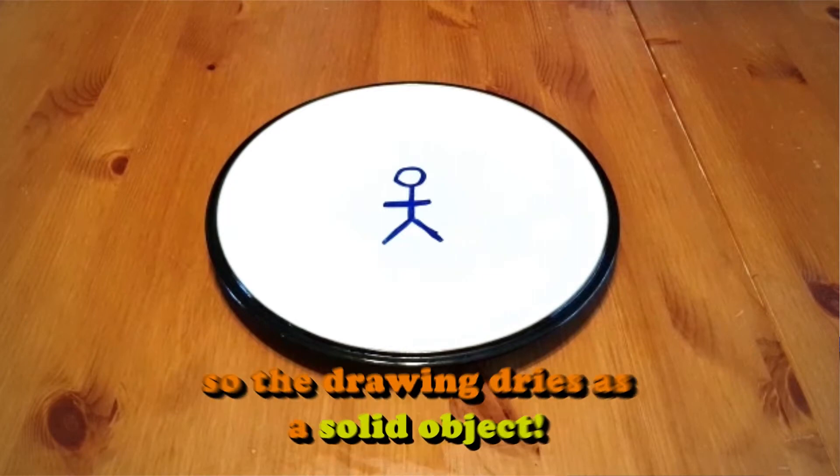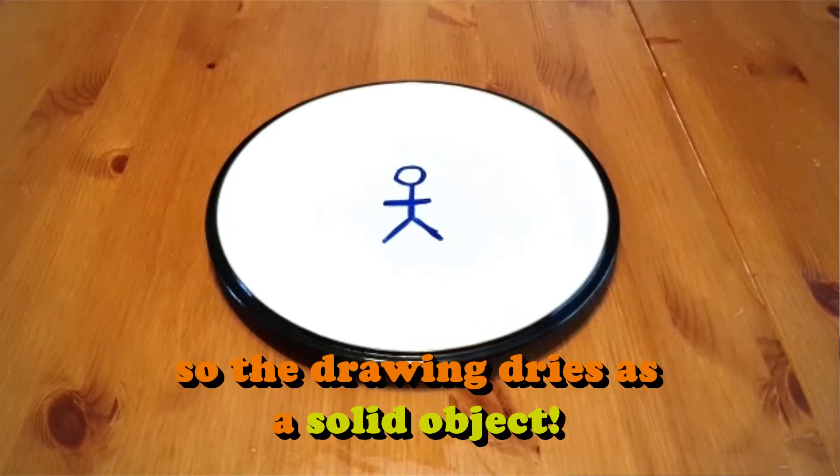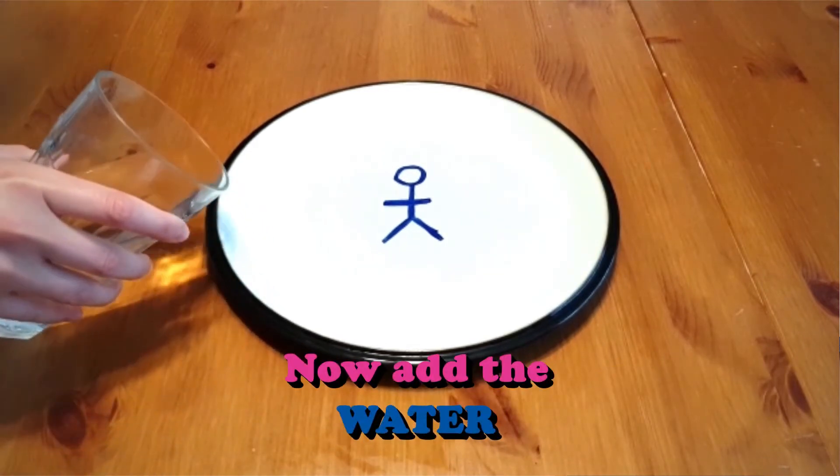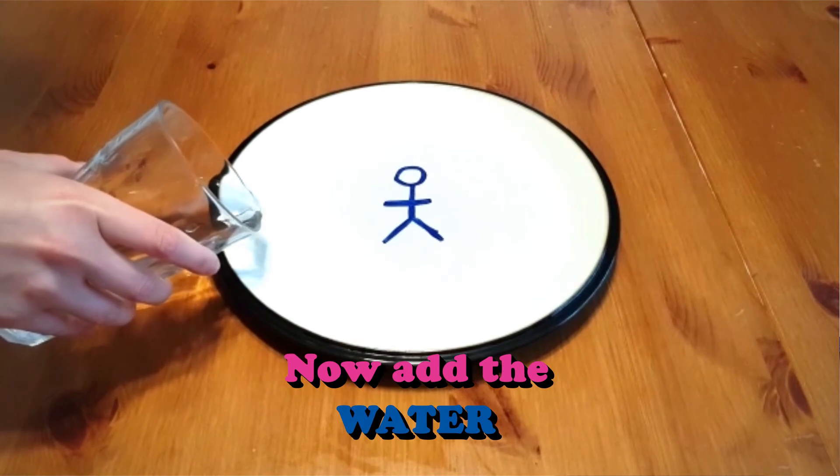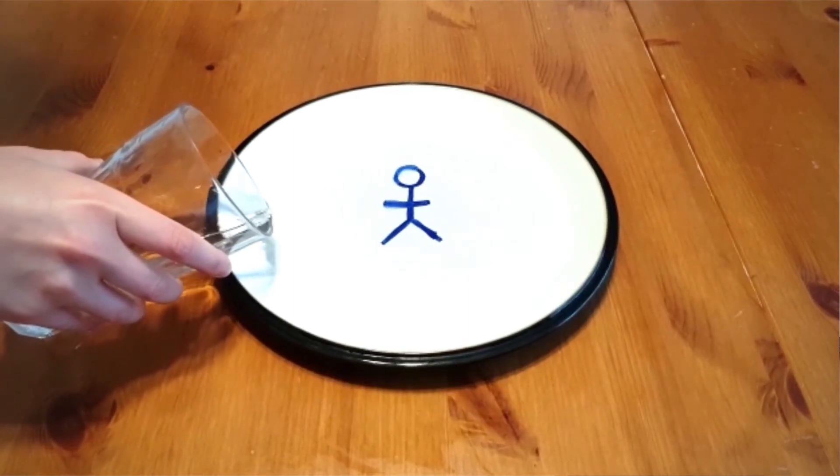Which is why you can wipe it away so easily. Then very gently add some water without splashing. The other two important properties of a whiteboard marker is that the ink is less dense than water.